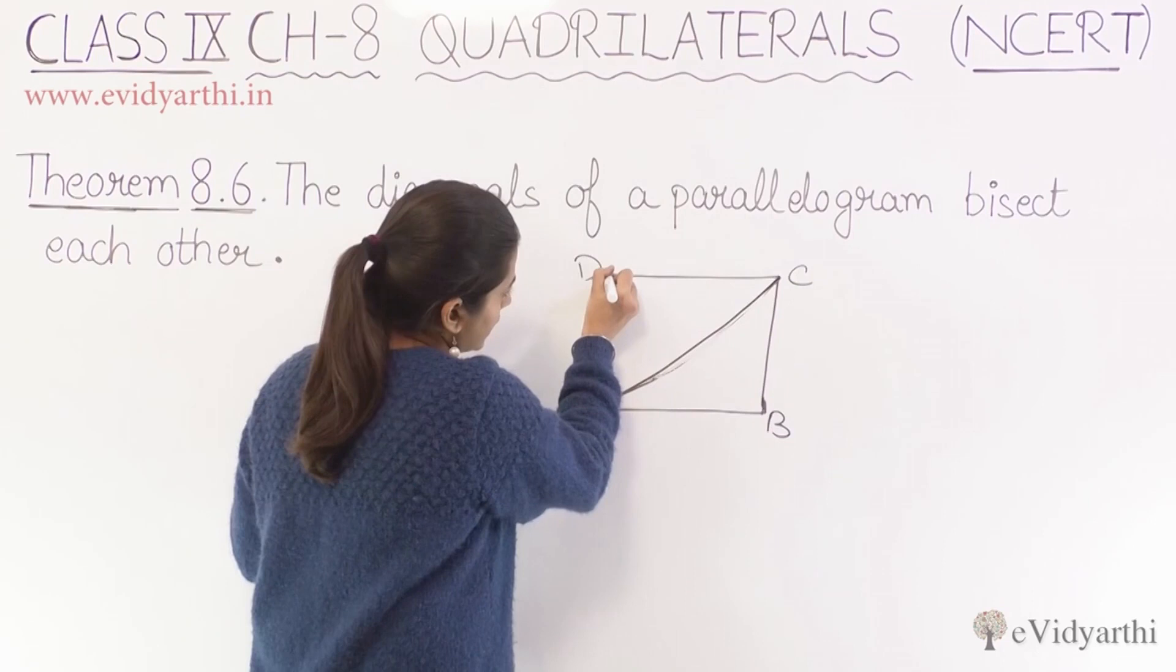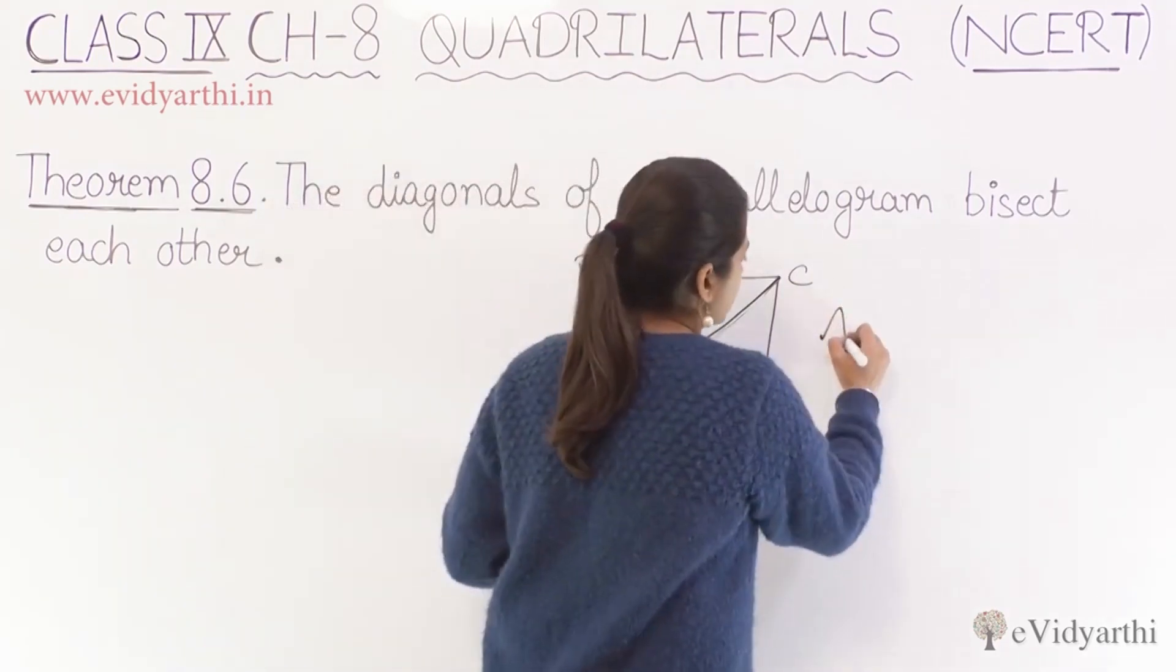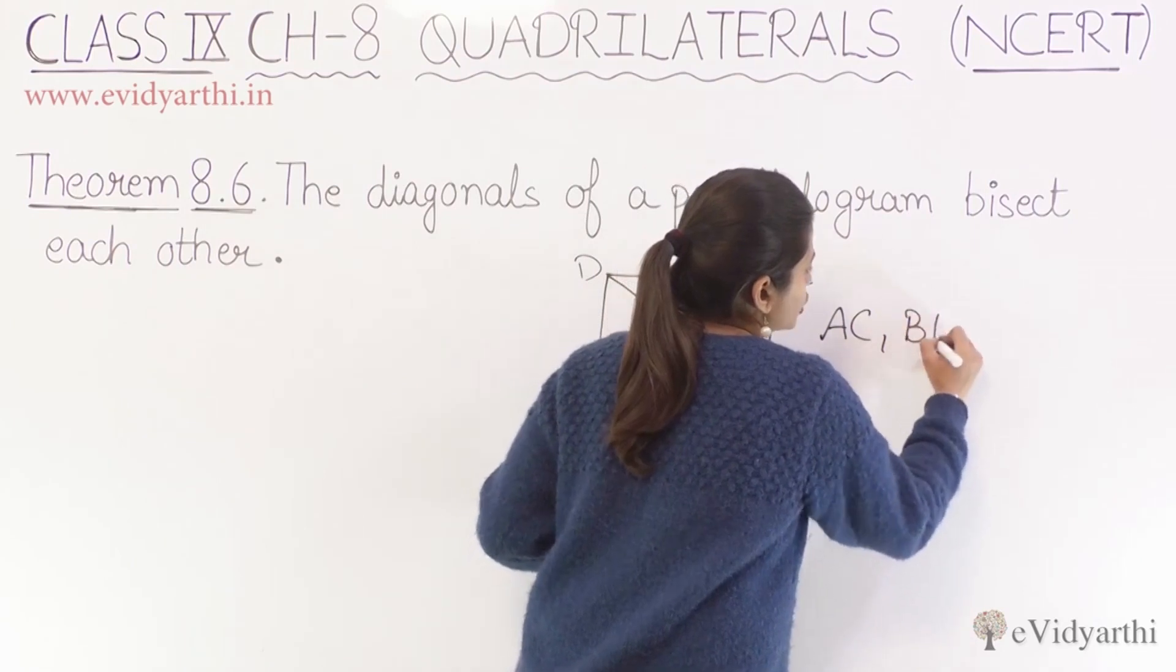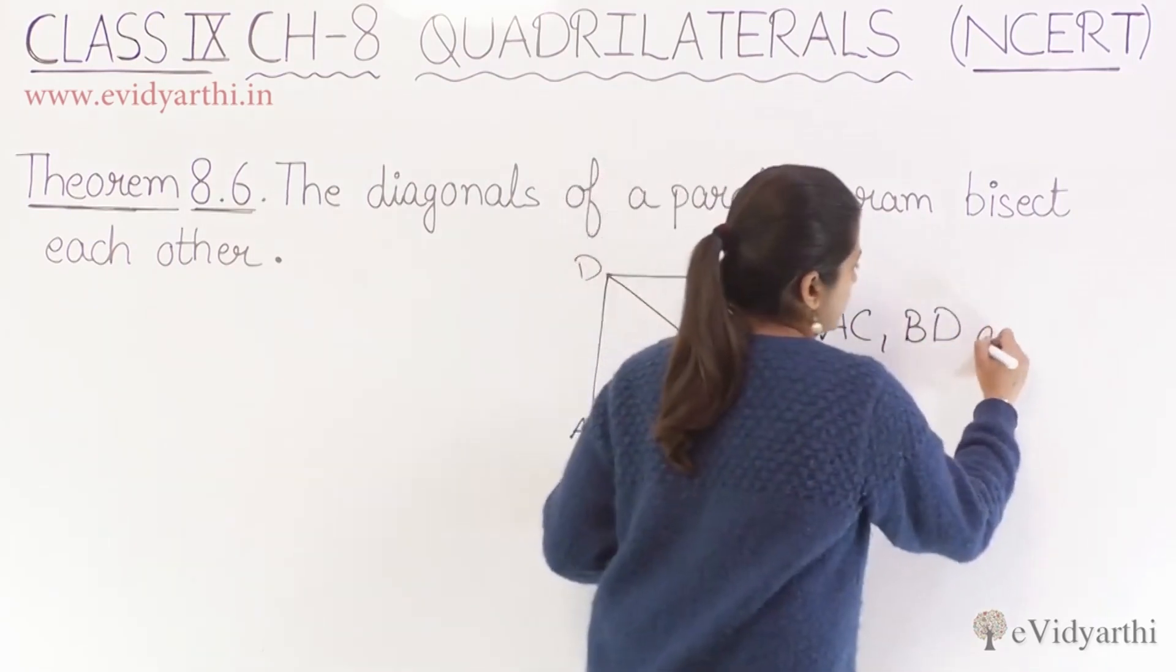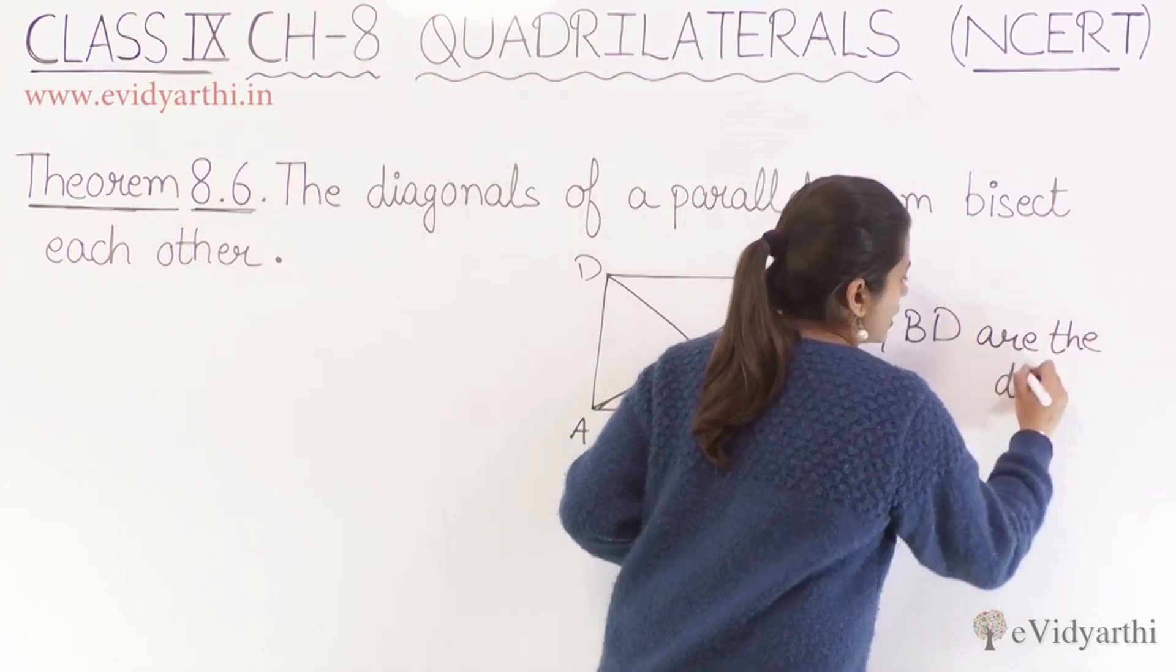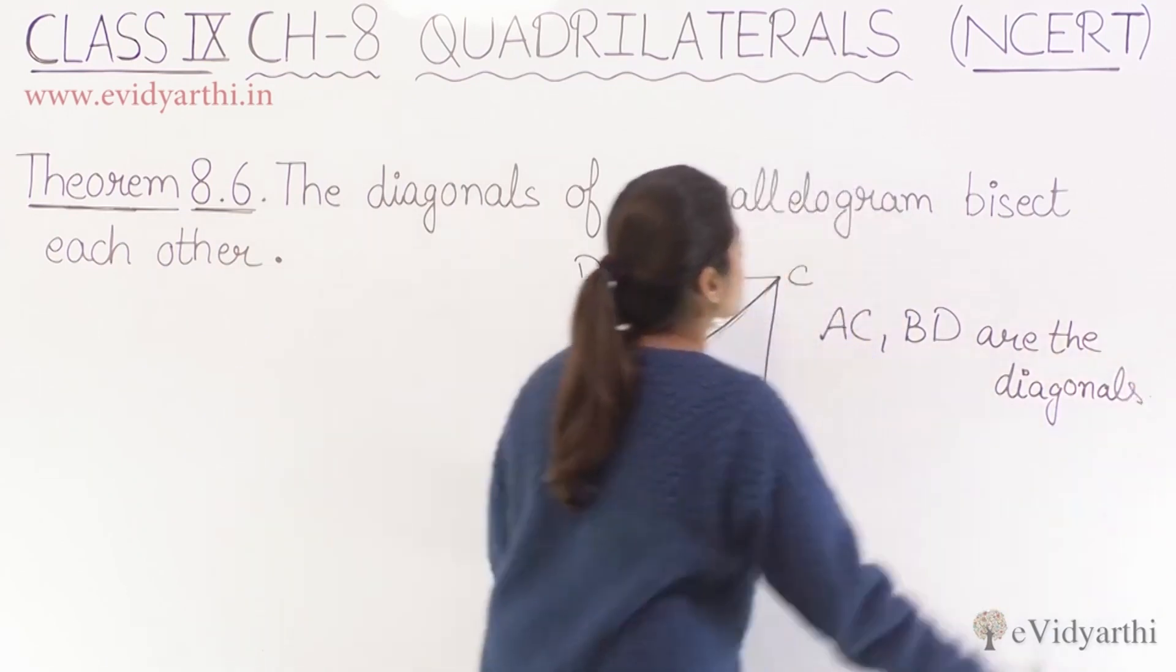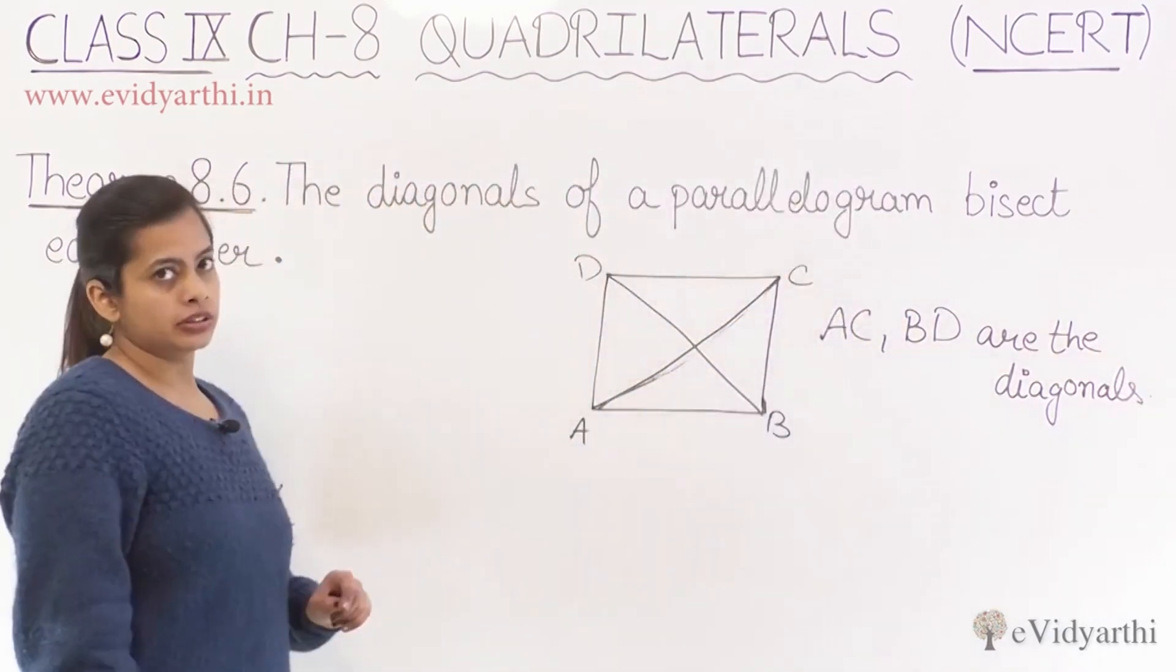One diagonal is AC, then we have another diagonal BD. So AC and BD are the two diagonals of the parallelogram ABCD. Now here in our theorem, what is given?